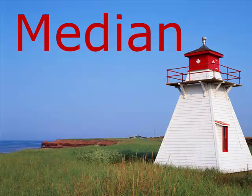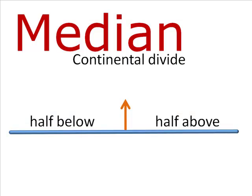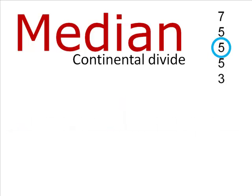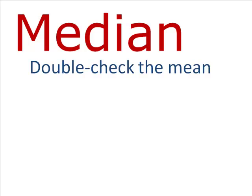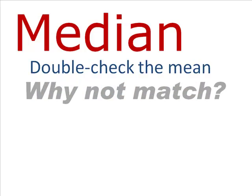Similarly, the median is a good alert signal. The median is the continental divide — half the scores, regardless of their magnitude, are below it, and half are above it. In a distribution with an odd number of scores, the median is literally the middle score. If there is an even number of scores, the median is the average of the two middle-most scores. One big reason to love medians is that they provide a double-check on the mean. If the median doesn't agree with the mean, you should investigate the data so you know why this occurred.